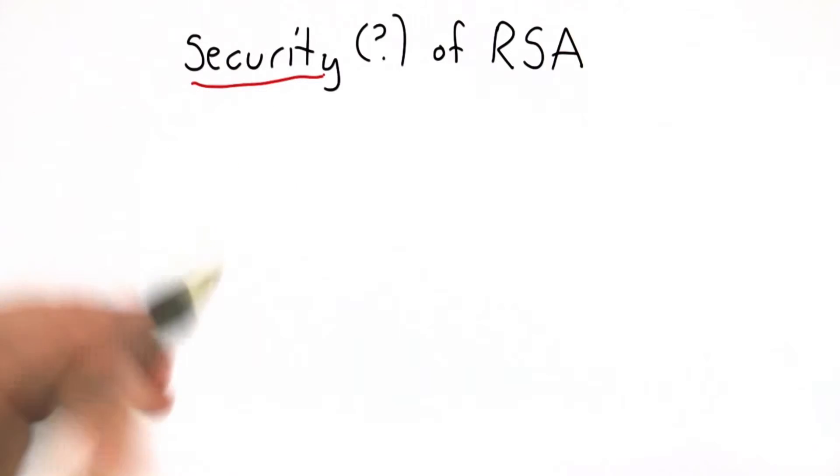So now we're going to look at whether RSA has the security properties we need. We've seen that it has the correctness property, that encryption with a public key and decryption with a private key are indeed inverses.